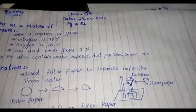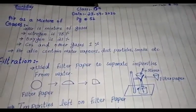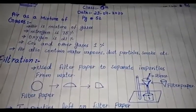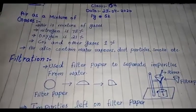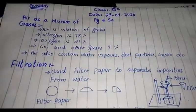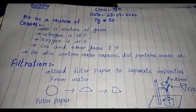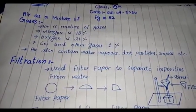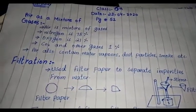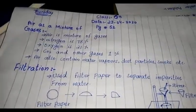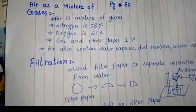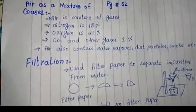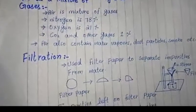Many dust particles, water vapors, and smoke — these particles are also contained in air and make up the remaining one part of the air.